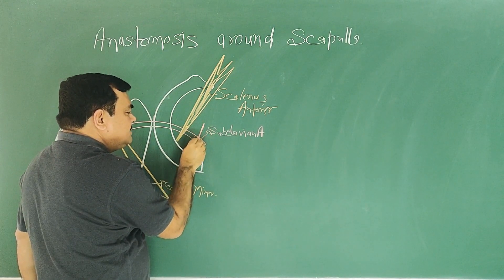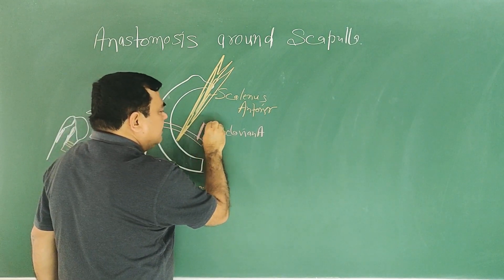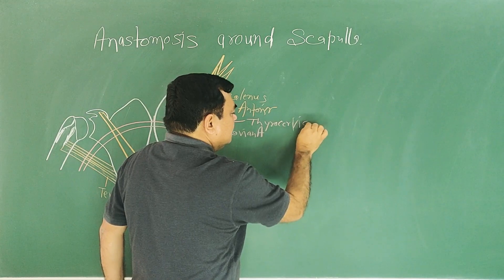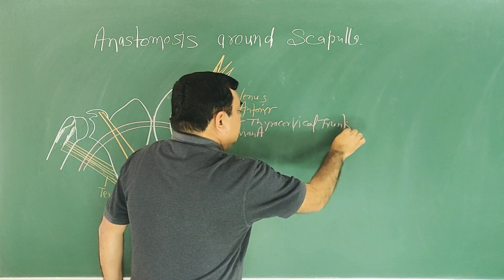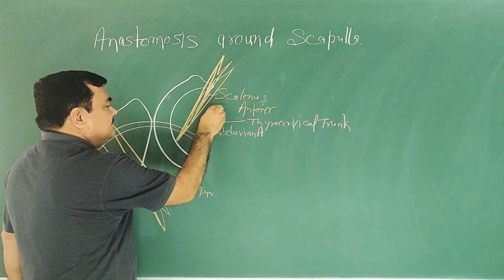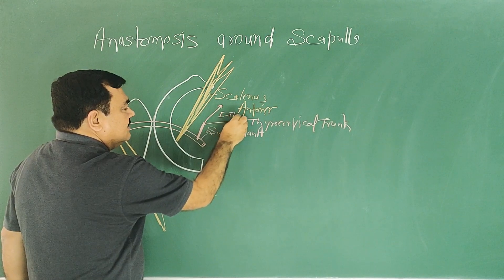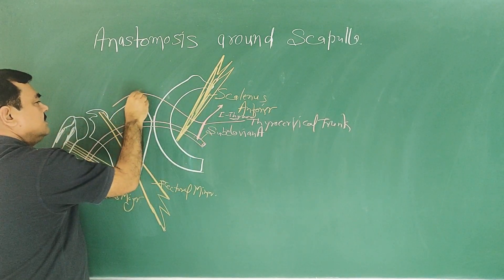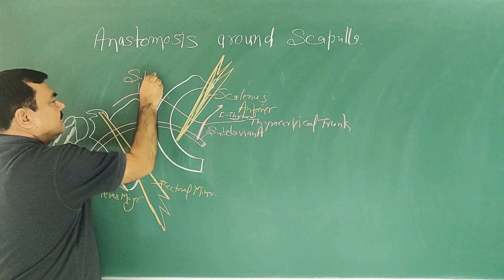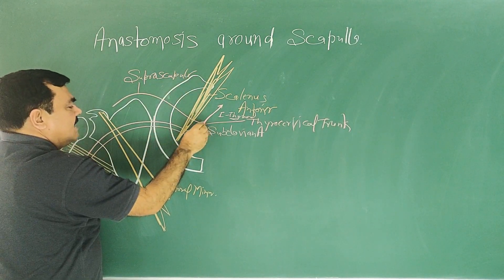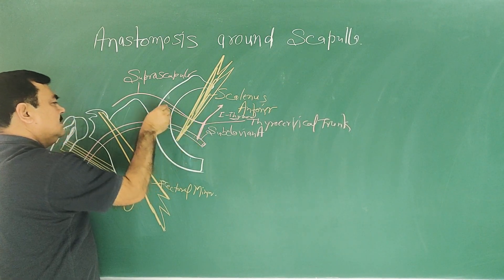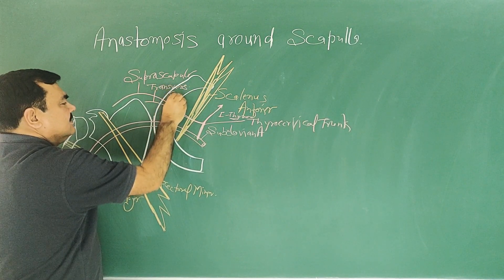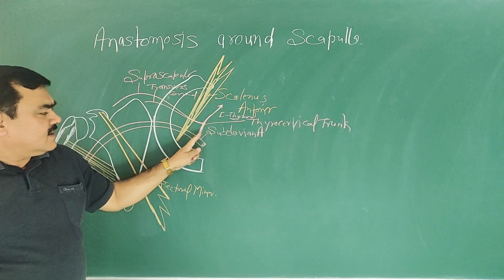The first part gives one branch, and that is the thyrocervical trunk. The thyrocervical trunk gives three branches: inferior thyroid, suprascapular, and transverse cervical.